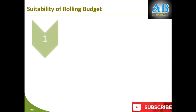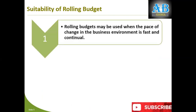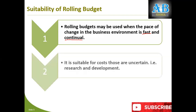Rolling budget is suitable when you have a dynamic business environment where you are uncertain what will happen in the future — where the business environment is changing at a very fast and continuous pace. It is also suitable for costs that have uncertainties, like research and development, where you are not certain how much you will incur on a particular project.